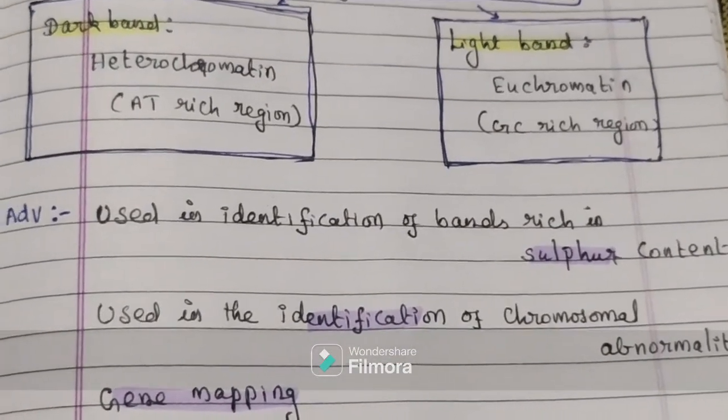After adding the fixative solution at a 3:1 ratio of methanol and glacial acetic acid, cells are dropped onto a slide, then dried. The slide is stained using a dye, then visualized under the microscope, and photographs are taken to study the chromosome banding pattern using a light microscope.